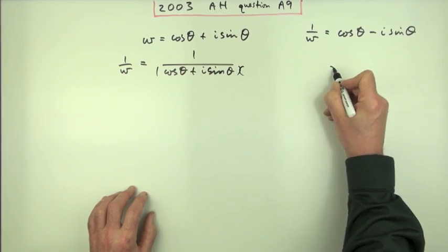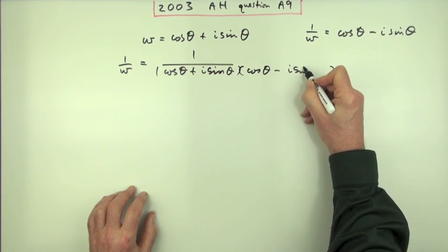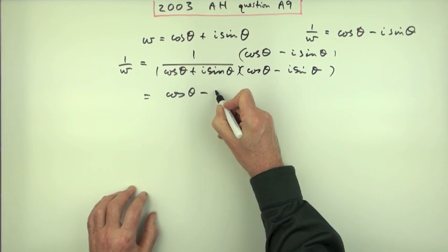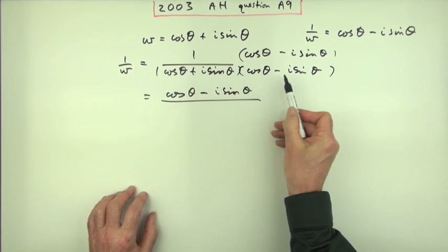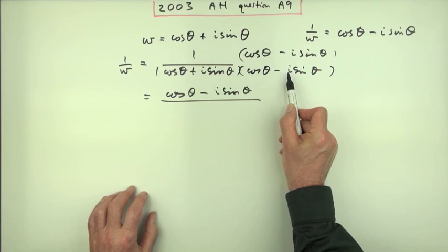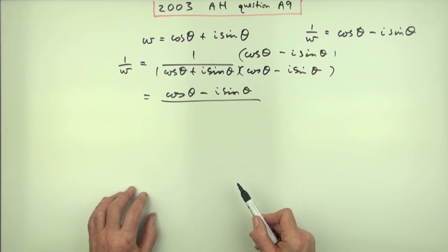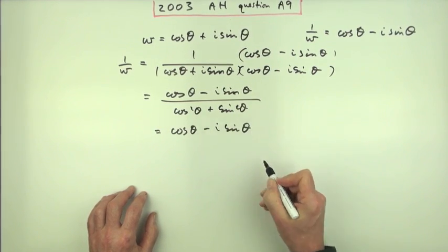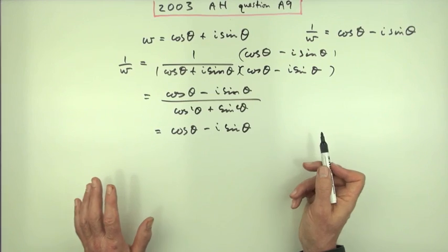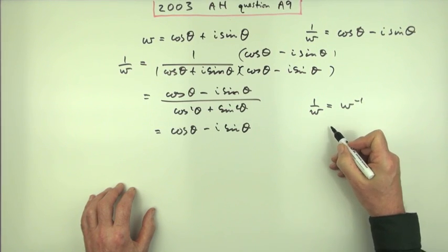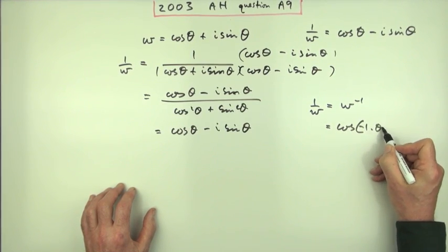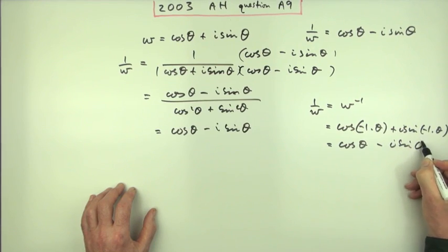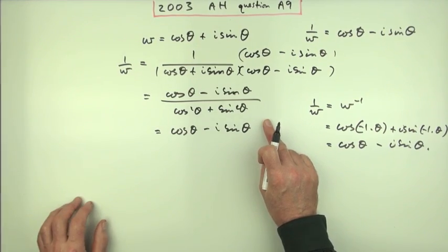Multiply the top and bottom by the complex conjugate, cos θ − i sin θ. You're left with cos θ − i sin θ over, because of the i² being −1, that's the factorisation for the sum of two squares: cos² θ + sin² θ, which equals 1. So 1/W = cos θ − i sin θ. That was a long way round for one mark. You could have used De Moivre's and said 1/W is W to the negative 1, so it equals cos(−θ) + i sin(−θ), which then gives the same result.